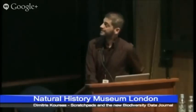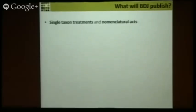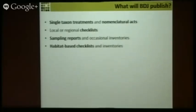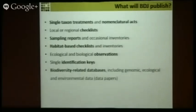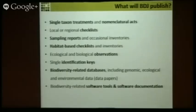What can you actually publish in the BDJ? The answer is all your valuable work that you cannot easily publish anywhere else. This includes: single taxon treatments or nomenclature acts, local or regional checklists, sampling reports, habitat-based checklists, ecological and biological observations, single identification keys, biodiversity-related databases, and biodiversity-related software tools or their documentation.